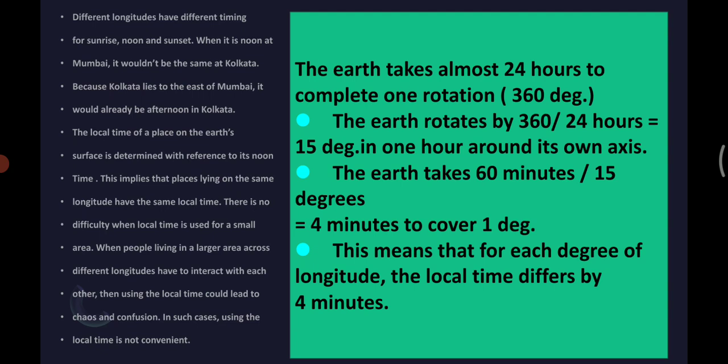For 24 hours, Earth takes to complete 360 degrees. The Earth rotates by 360 divided by 24, that is 15 degrees in one hour around its own axis. So if it takes 24 hours to cover 360 degrees, then in one hour we get 15 degrees.